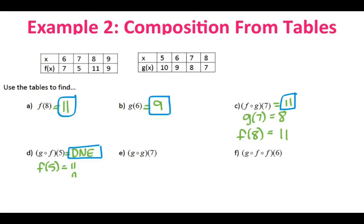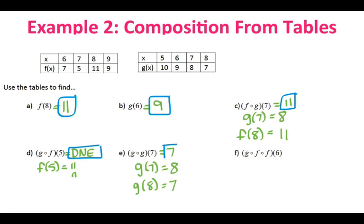For letter E, let's do g of 7 first. Going to my table, 7 is the x and the output is 8. Now I am finding g of 8 — you're working in the same function, so looking at the same table. My x is 8, and that output is 7. So g of g of 7 is 7.